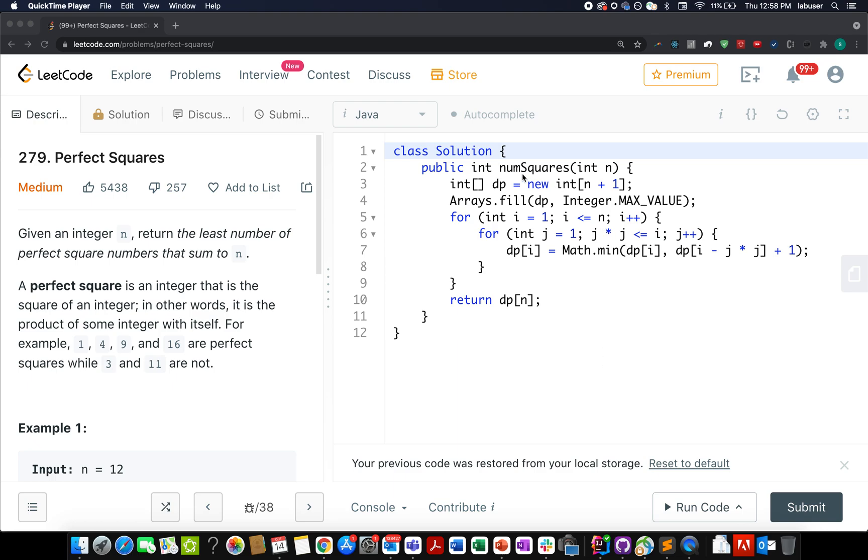Now, let's look at the coding section. The coding part is pretty simple and straightforward. Here, I created a new dp array of size n plus one because the index in the array starts from zero up till n and I initially filled in all the values with integer dot MAX_VALUE.